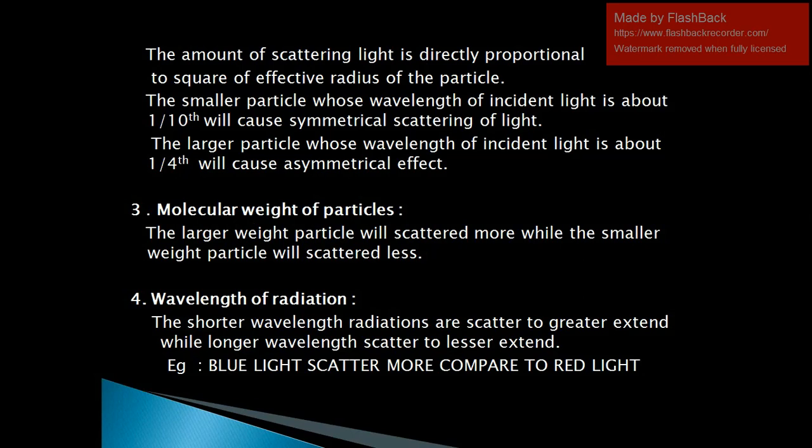The third factor affecting scattering of light is molecular weight of the particle. Larger weight particles will scatter more while smaller weight particles will scatter less. The fourth factor is wavelength of radiation. Shorter wavelength radiation is scattered to a greater extent while longer wavelength radiation scatters to a lesser extent. For example, blue light will scatter more compared to red light because it has a shorter wavelength, while red light scatters less because it has a longer wavelength.